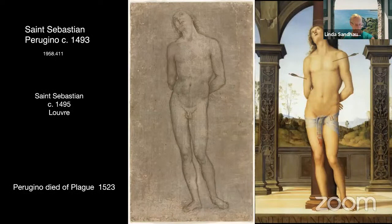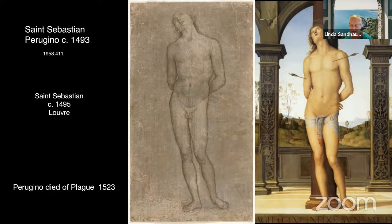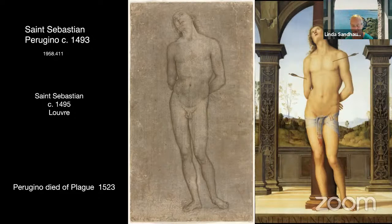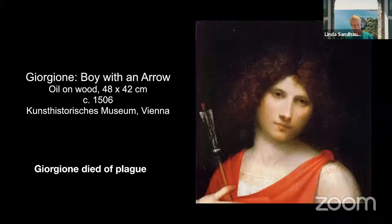Moving on to saint paintings — sufferers of plague commonly prayed to saints to intercede for them. Two of the most important are Saint Sebastian and Saint Roque. Sebastian was a Christian martyr sentenced to die by Roman Emperor Diocletian, ordered tied to a post and shot by arrows. During the Middle Ages he became a popular saint to pray to during plague epidemics, with some seeing similarities between his arrow wounds and the bulbous sores of plague. A 1493 drawing of Saint Sebastian by Perugino is in the CMA collection; the fully realized painting based on it hangs in the Louvre. Perugino died of plague in 1523.